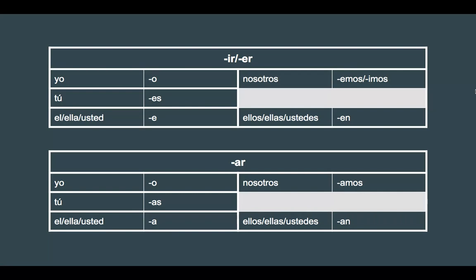For AR verbs: yo is 'o'; tú is 'as'; él, ella, usted is 'a'; nosotros is 'amos'; and ellas, ellos, ustedes is 'an'. These are our endings — you must know this. You'll probably memorize it at some point, but these are very important. You will be using this constantly.